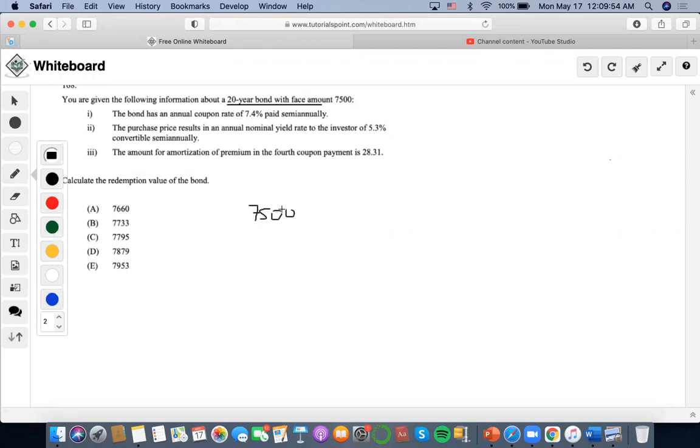times 0.037. Now it says purchase price results in 5.3% semi-annual yield, which is 2.65%, and there are 20 years, so semi-annual periods is 40, right?